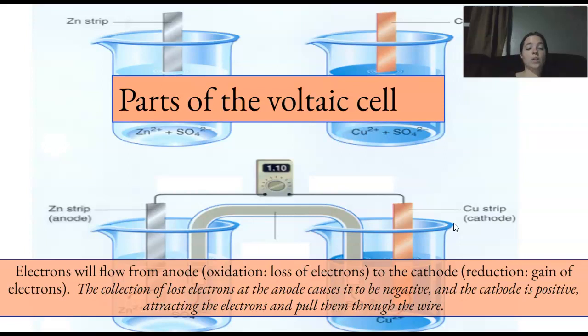Okay, so, electrons will flow from the anode, loss of electrons, to the cathode, gain of electrons. So, oxidation loses, reduction gains. The collection of lost electrons at the anode causes it to be negative, and the cathode is positive. Positive cathode, anode negative, think of like onion. Okay, so it flows across here.